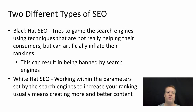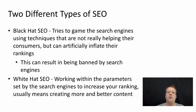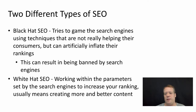So before we get too far, let me say that there are two different types of SEO that commonly go on. One of them I discourage quite a bit, which is black hat SEO. The idea here is that there are some tricks of the algorithms — because they are algorithms — that you can try to fool. You can use things like content farms and keyword stuffing to try and create the illusion that your website is much more popular or is much more relevant to a particular topic than it actually is.